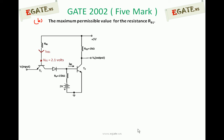Second one: the maximum permissible value for the resistance RB1. RB1 is the resistor connected to the base of T1 transistor. Assume that the voltage across base of T1, VB1, is going to be calculated as 2.1 volts. The maximum permissible value for resistance RB1 is to keep transistor T2 in saturation.